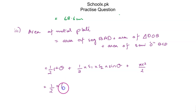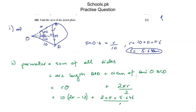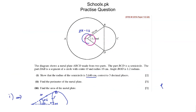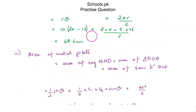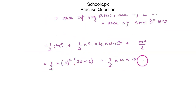Plugging in the values: ½ × 10² × (2π − 1.2), plus ½ × 10 × 10 × sin(1.2) — where 10 and 10 are the two equal sides OB and OD, and 1.2 radians is the angle between them — plus π × (5.646)² / 2.